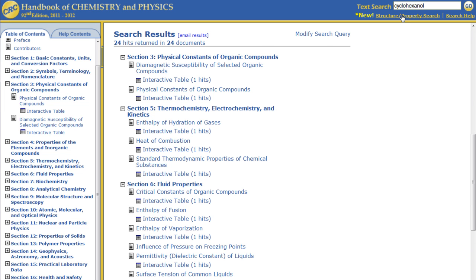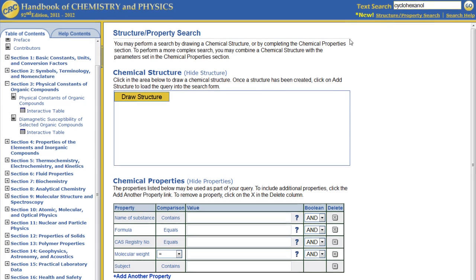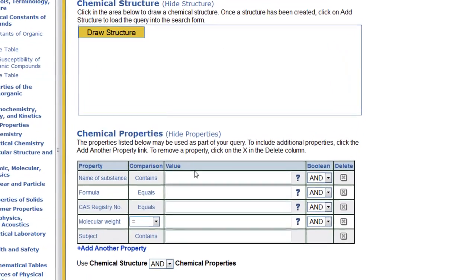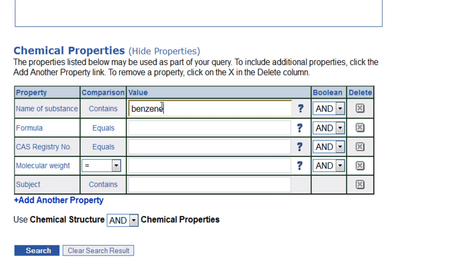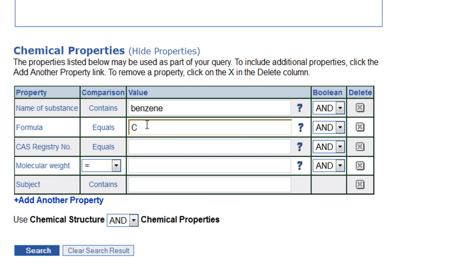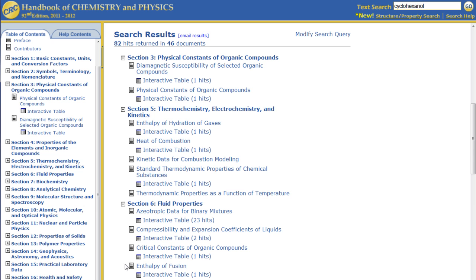Multiple properties can also be combined in a search if they are known. When searching a chemical name, benzene for example, many names that include benzene will be found. You can narrow your results by adding the chemical formula to your search. Keep in mind that the formula field is case-sensitive, so you will need to make sure that you use capital letters.